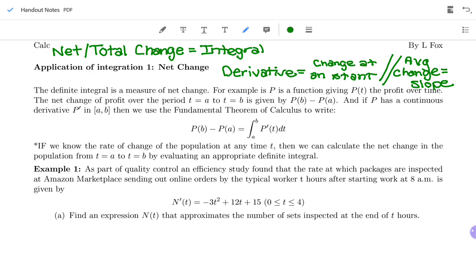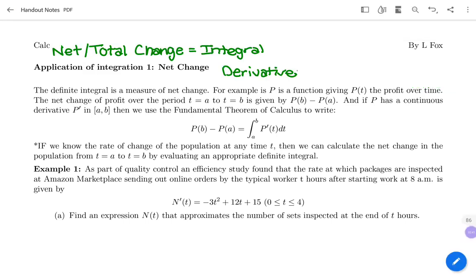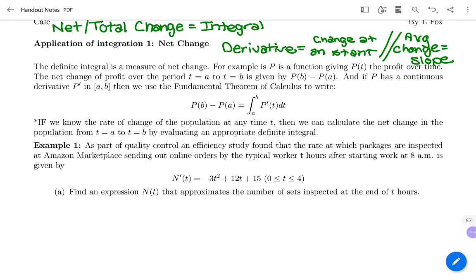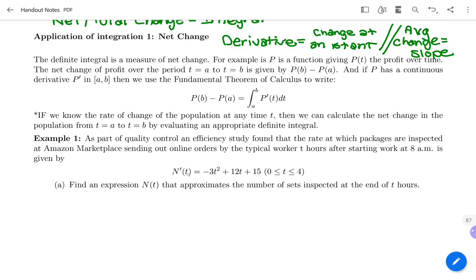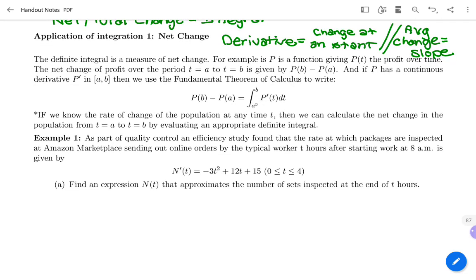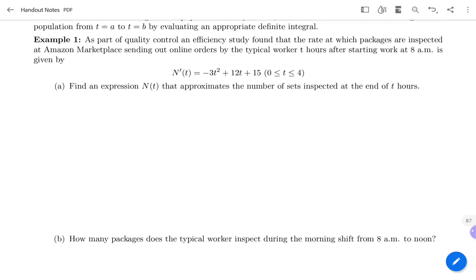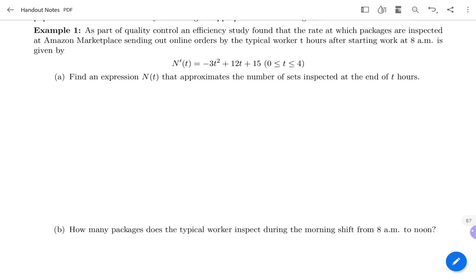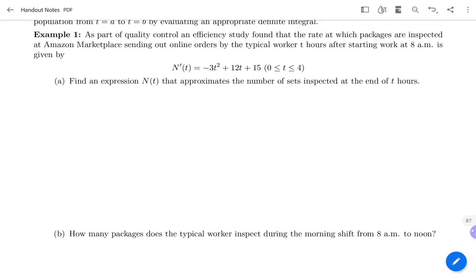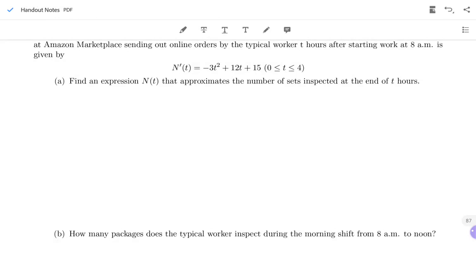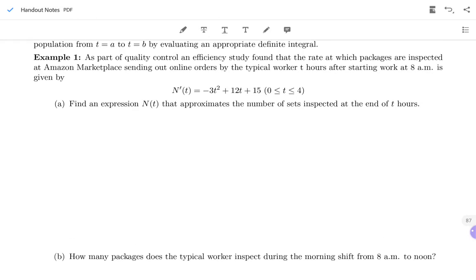Here we're going to work the opposite way. In test one, we were given the function and asked how fast was it changing at an instant. Here we're given the derivative, the rate of change, and asked for the net change. We're just going to go the opposite way from before. These problems are just like initial value problems, not anything crazy. We're going to follow our steps for an initial value problem that we did when we first learned antiderivatives.